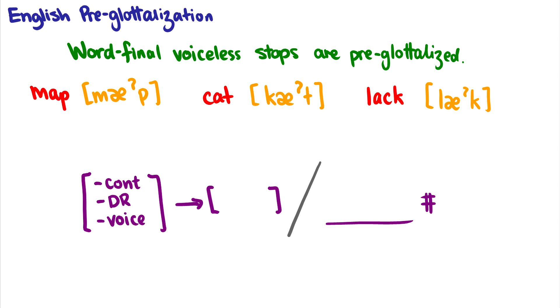So how do we formulate this process? Well it's a process that targets word final voiceless stops. So in other words at the end of the sound it should be the end of the word. So environment basically says at the end of the word. We're also targeting voiceless stops. So I could say something like minus delayed release to get the stops, minus continuant just to really narrow down that these are obstruents we're talking about, and then minus voice to say that they're voiceless.